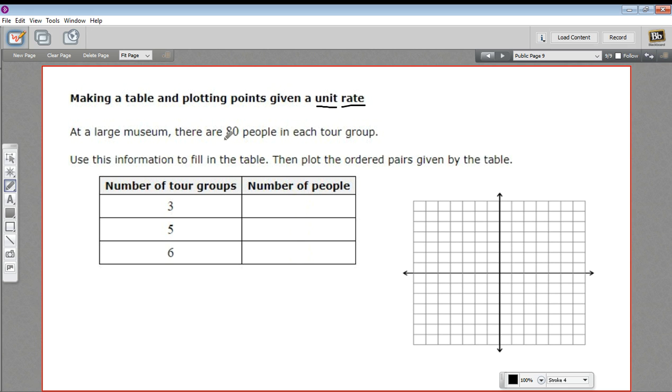So our unit rate in this one is that there are 80 people in one tour group. So 80 people per tour group. That's our unit rate, and we're going to use that to fill in this table. We're given some numbers of tour groups, and then we have to determine the numbers of people. And then we're going to graph this.